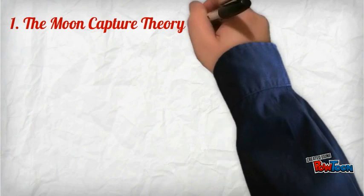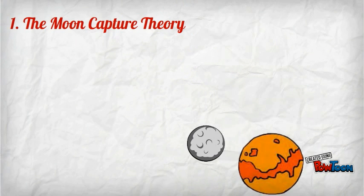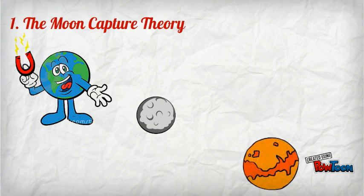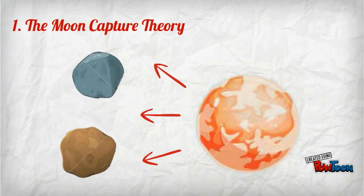The first theory is the Moon Capture Theory. Some researchers suggest that the moon may have originally formed elsewhere, perhaps even around another planet such as Venus, before being grabbed by Earth's gravitational force. That's not strange, because other worlds have gained moons in this manner.